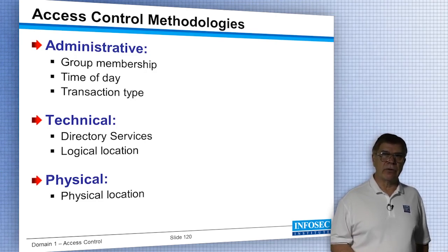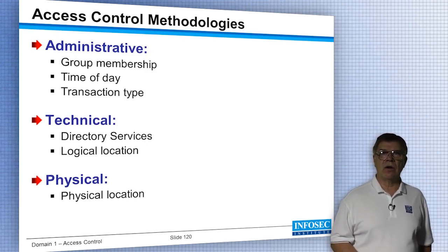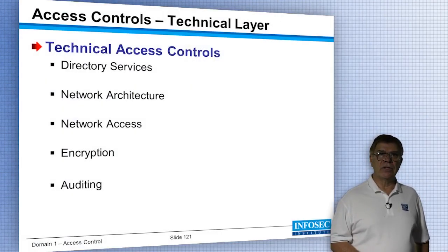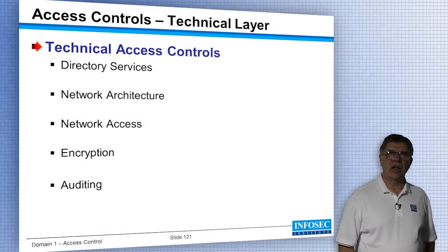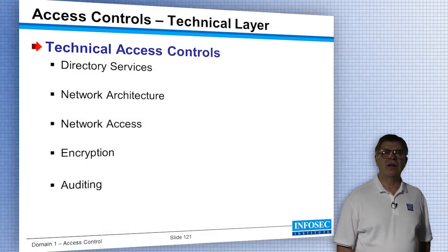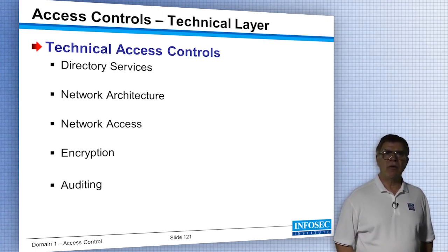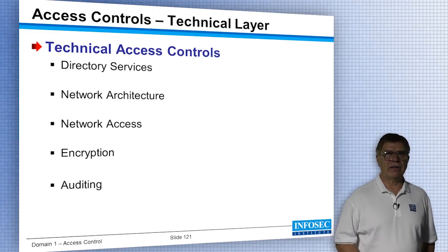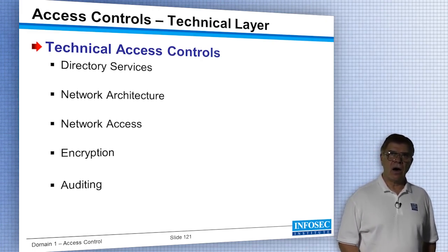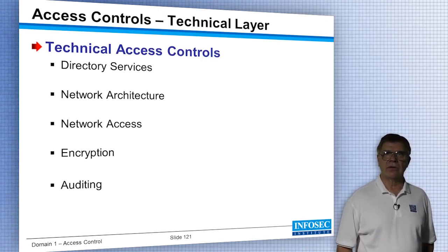Technical methodologies include things like Active Directory services and logical location. Physical is simply the physical location. Those are all methodologies for controlling access. Technical access controls include directory services, and the way you architect the network can also be an access control. Network access and encryption are technical controls. Auditing is also a technical access control — make note of that, you'll see it again.